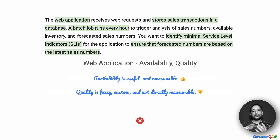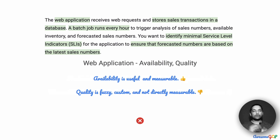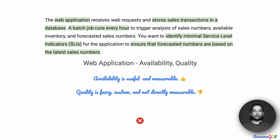We already saw web application availability and quality. Availability is standardized, measurable, and very useful. However, quality is a custom definition depending on the team and what you are trying to achieve — it is not directly measurable and it is fuzzy in its definition. So anything involving web application quality is out for me.